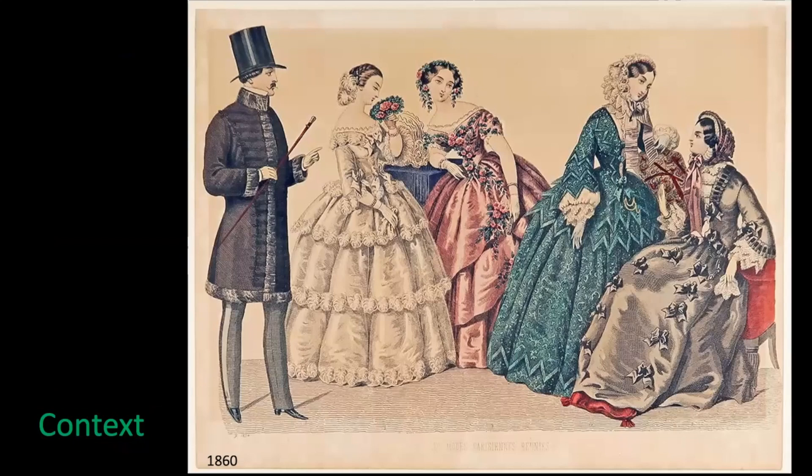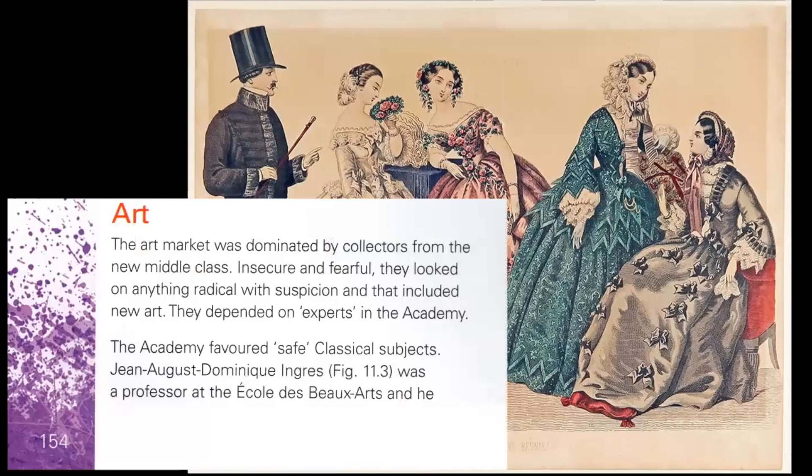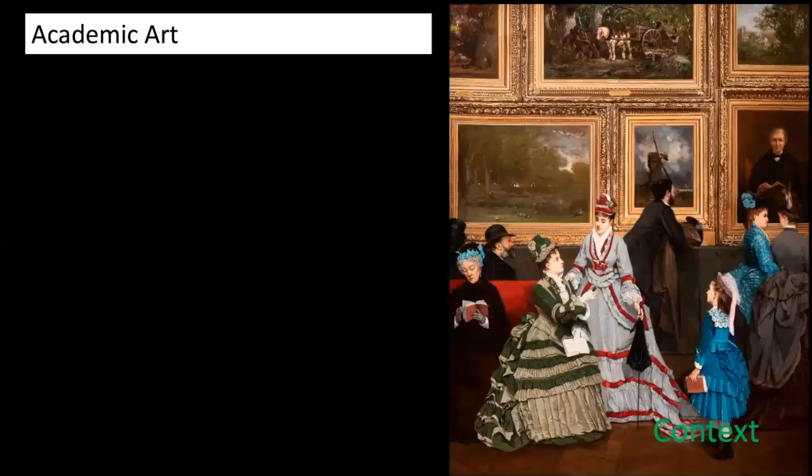All this had an effect on society, and by the time we get to 1860 we have a new middle class who had gained their wealth due to the Industrial Revolution, but these people were a little bit insecure. The art market was dominated by collectors from this new middle class who, insecure and fearful, looked on anything radical with great suspicion — and that included new art. So they depended on experts in the academy, which favoured safe classical subjects.